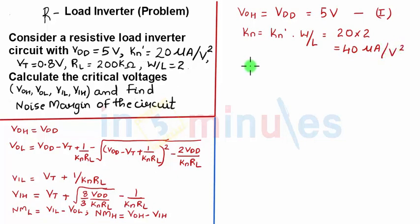Let's also find KN into RL. KN we just found as 40, RL is 200 K. So this is 40 micro amperes by volt square, so this is 8 with inversion of voltage as a unit.